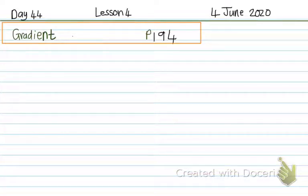Good day grade 10, this is day 44, lesson 4 of analytical geometry chapter 8. This is the 4th of June and today we're going to talk about gradient.